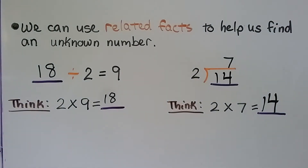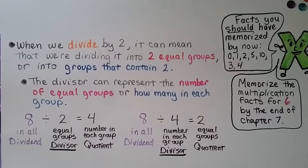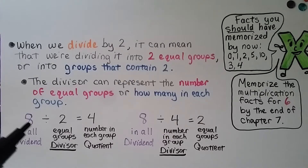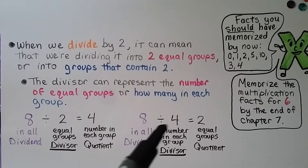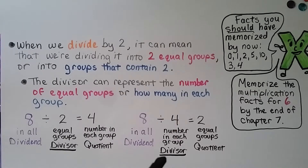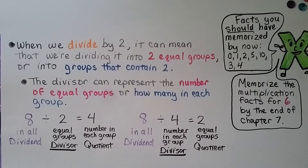We can use related facts to help us solve division problems. When we divide by 2, it can mean dividing into two equal groups or into groups that contain 2. The divisor can represent the number of equal groups or how many in each group. 8 divided by 2 as two equal groups gives a quotient of 4 — the number in each group. Or, 8 divided by 4 per group gives a quotient of 2 — the number of equal groups. So the divisor and quotient can trade places to represent the number of equal groups or how many in each group.